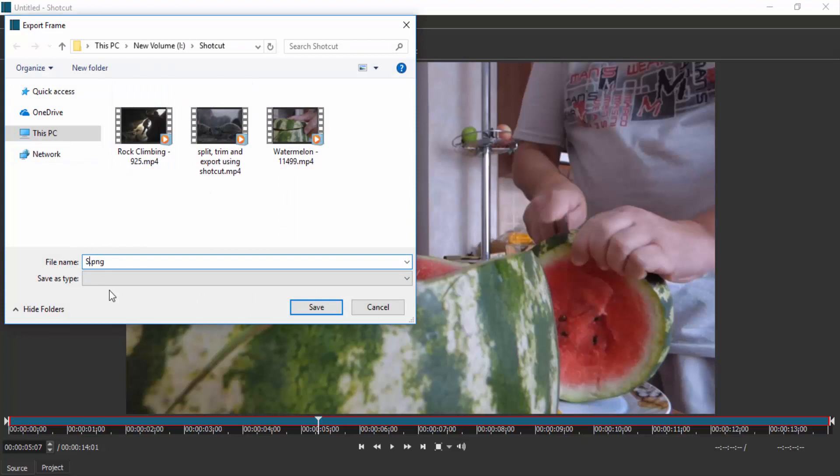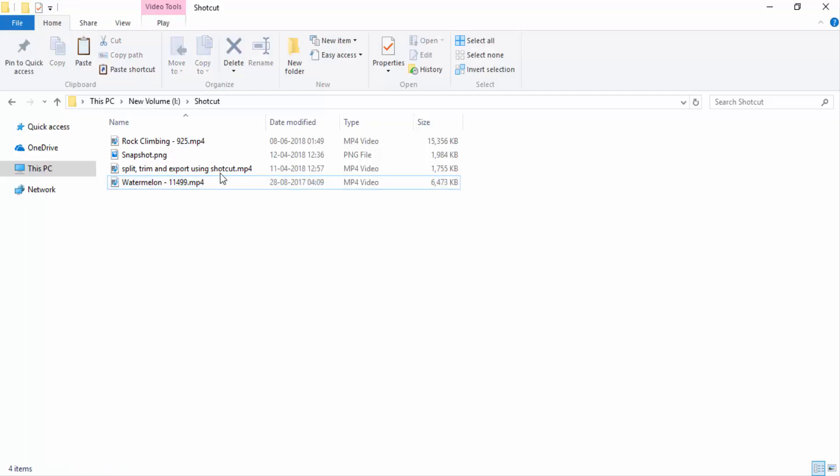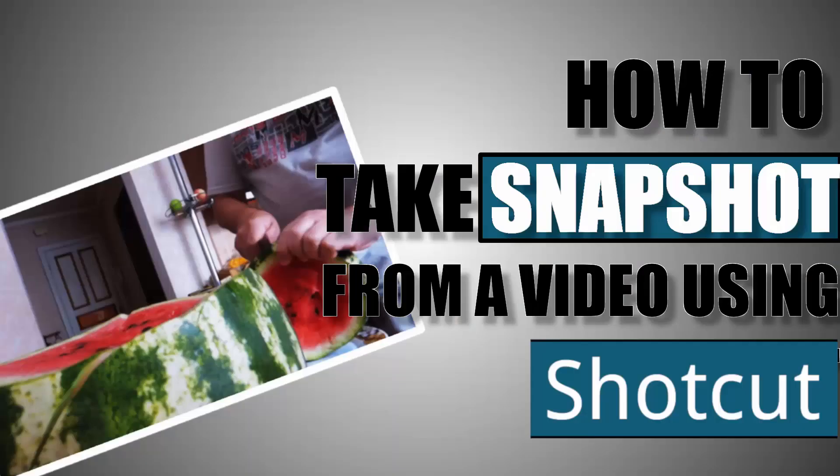Type in your file name and save it. So that's it guys, this is a quick tip for taking a snapshot from a video using Shotcut. Thanks for watching, bye.